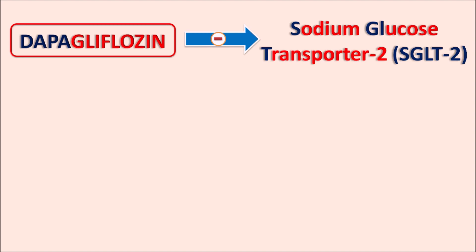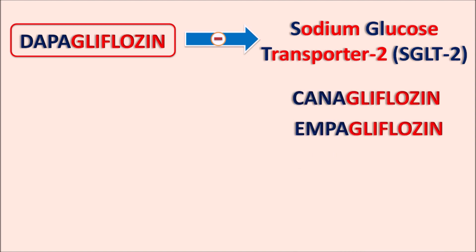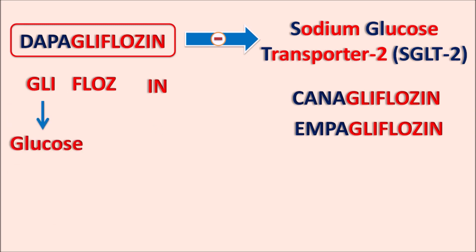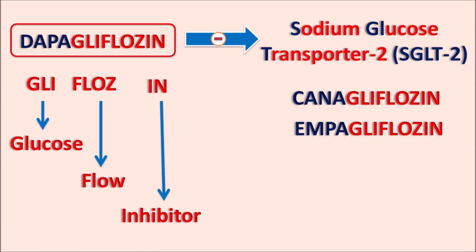We have a few other drugs with a similar suffix, such as canagliflozin and empagliflozin — all these are sodium glucose transporter 2 inhibitors. The suffix can be split into three parts: GLY, FLOWS, and IN. GLY indicates this drug is related to glucose, FLOWS indicates the flow, and IN indicates inhibitor. So the suffix 'gliflozin' means glucose flow inhibitor.